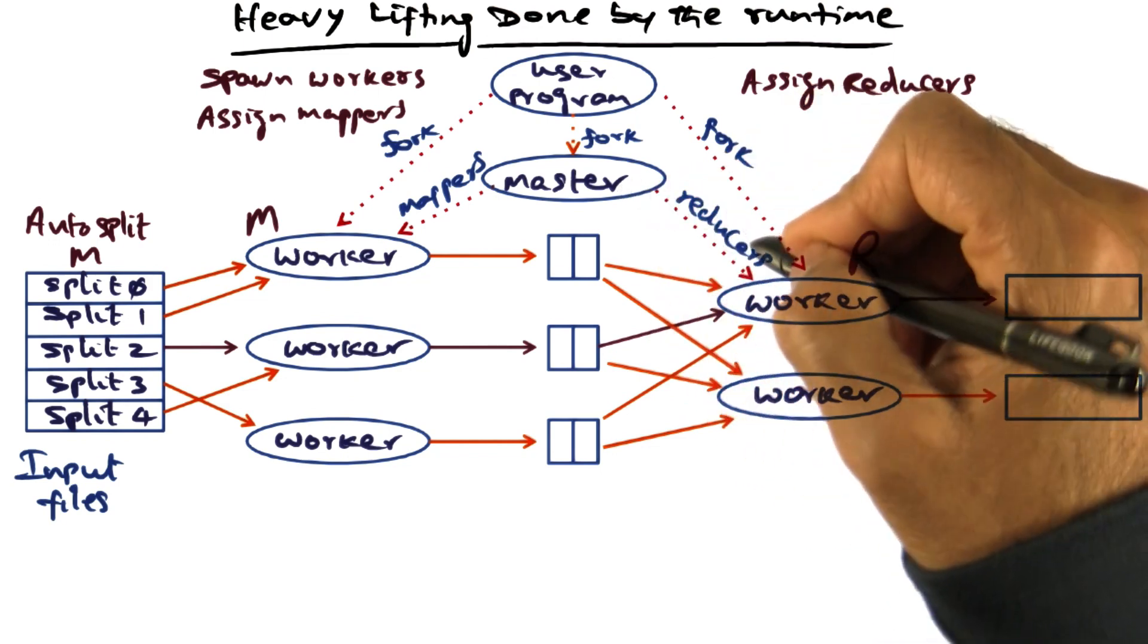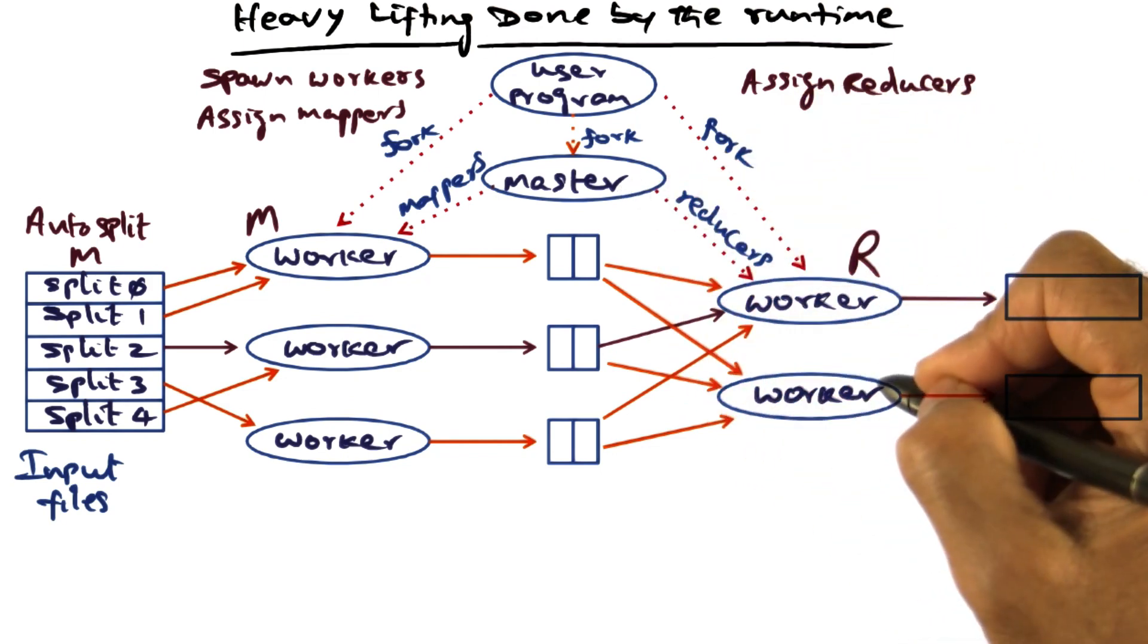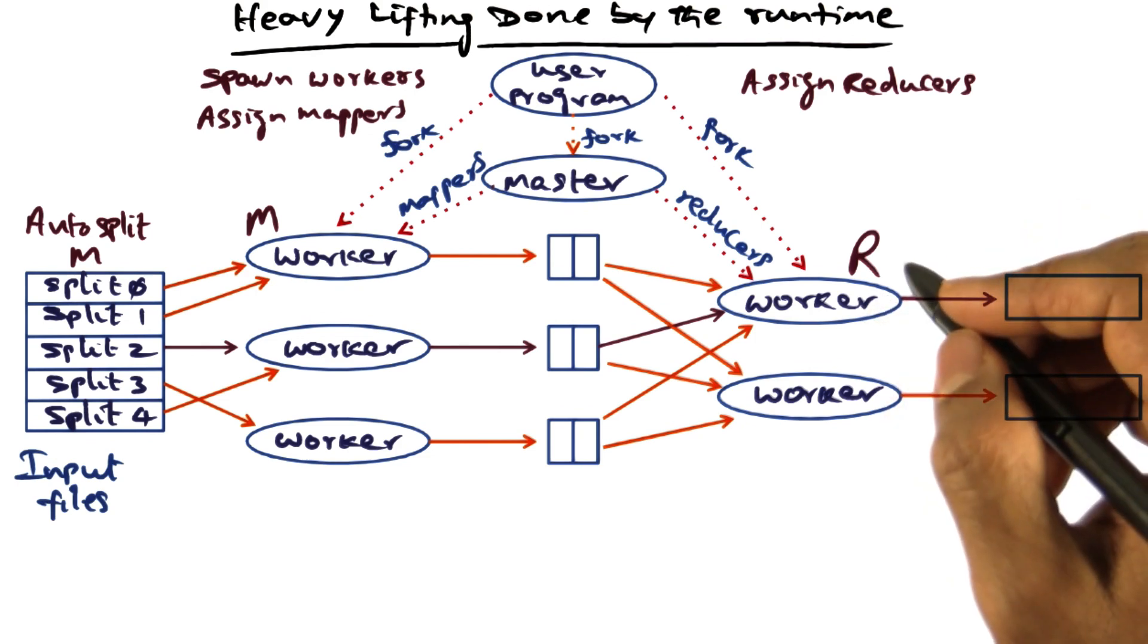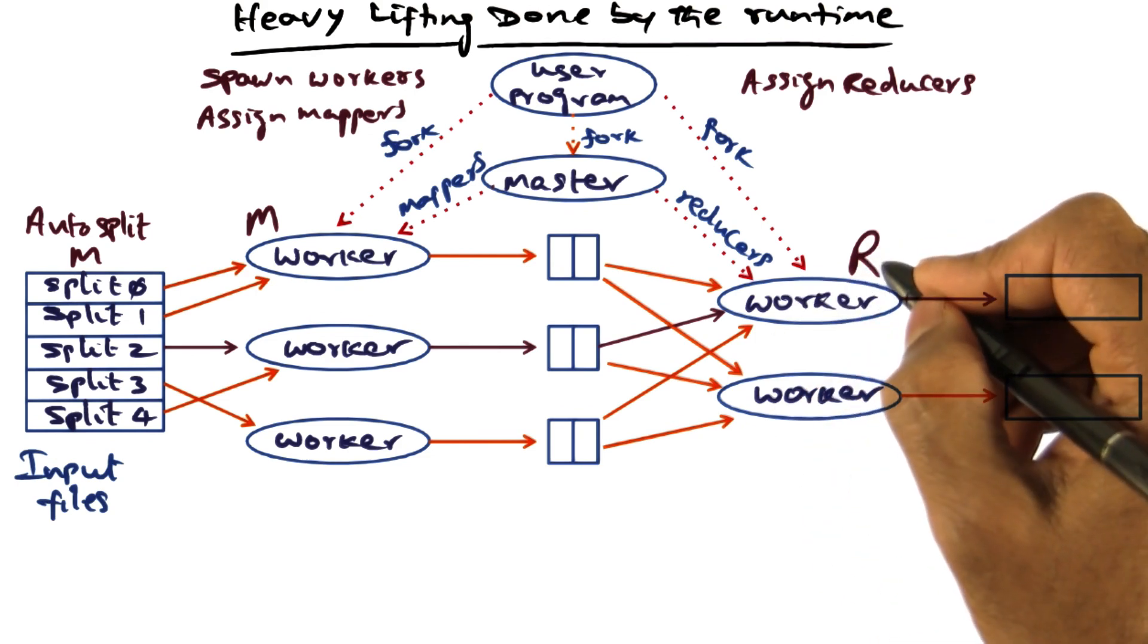The next thing that happens is that the master assigns reduced tasks to some number of worker threads. The number of reduces to be assigned to the workers is something that is decided by the application.